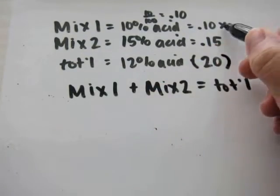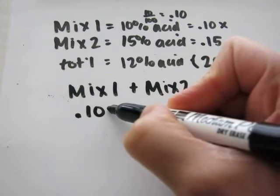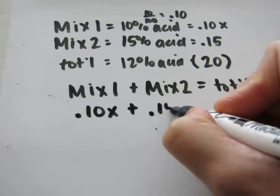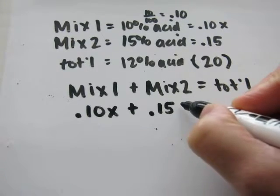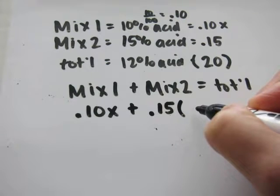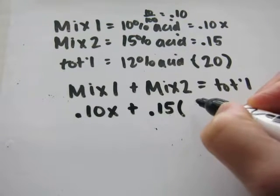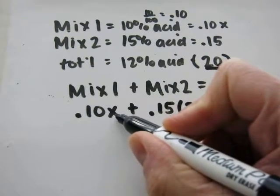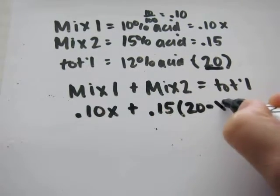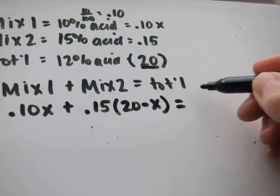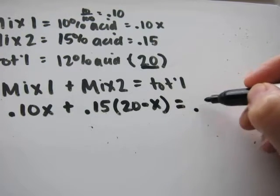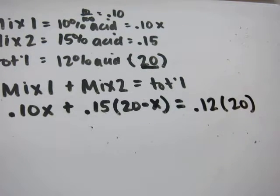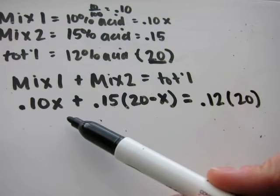So mixture 1 is going to be .10 times x. Mixture 2 is going to be .15 times the volume. And we don't know what the volume of the 15% acid is. But we know that it will be 20, which is the final volume, minus x, which is the volume of mixture 1. So 20 minus x equals. Now fill in for the total, which will be .12 times 20. So this is the equation that we're going to solve for.